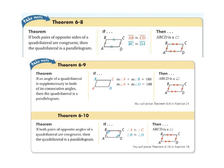Here are three theorems that will help you prove a quadrilateral is a parallelogram. Theorem 6-8 states if both pairs of opposite sides of a quadrilateral are congruent, then the quadrilateral is a parallelogram. Theorem 6-9 states that if an angle of a quadrilateral is supplementary to both of its consecutive angles, then the quadrilateral is a parallelogram.